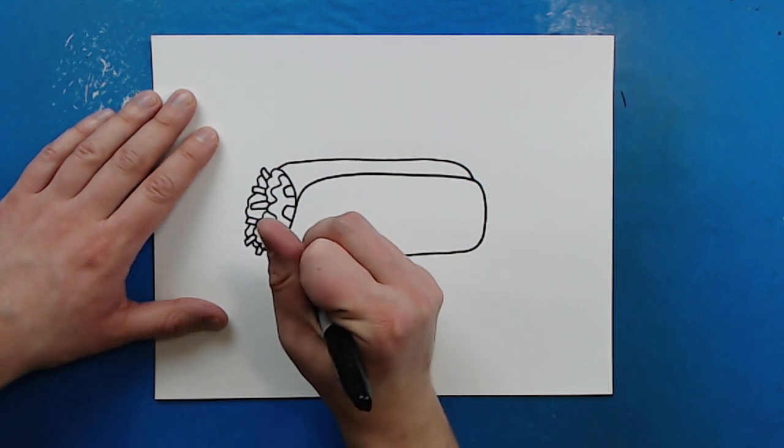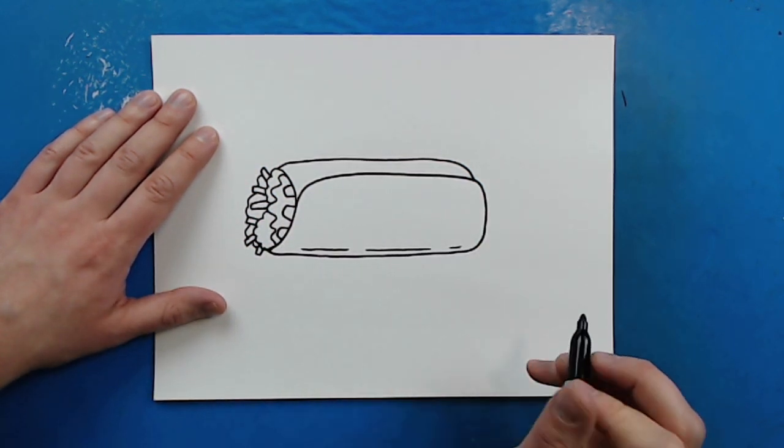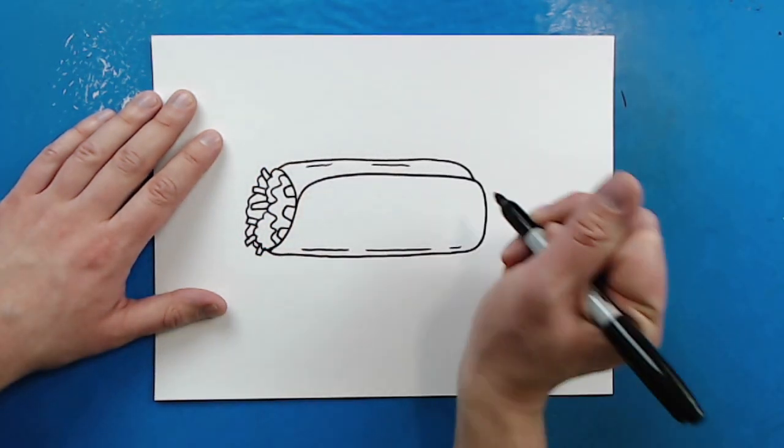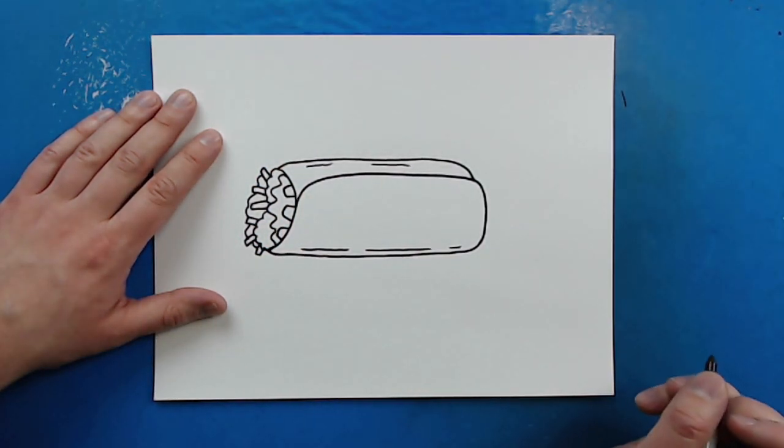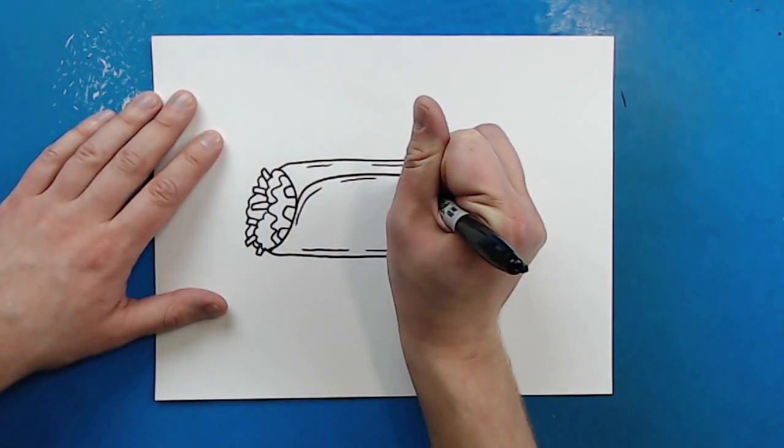Now on my burrito, I'm going to add just a couple little lines around the bottom and I'm going to put a couple up here as well just for some details. Then I'm going to add a couple little lines just right around here.